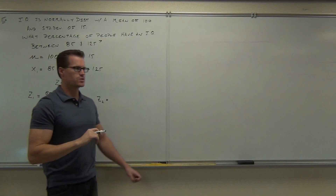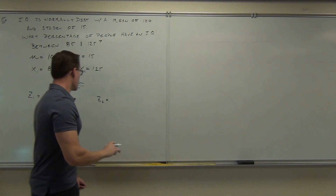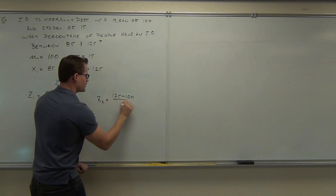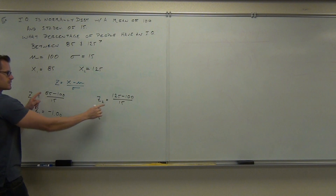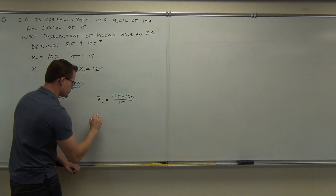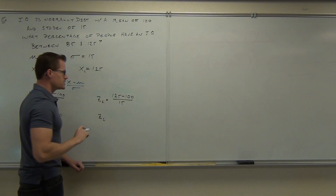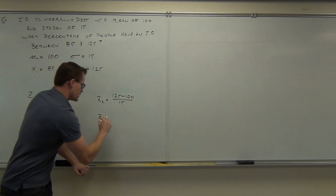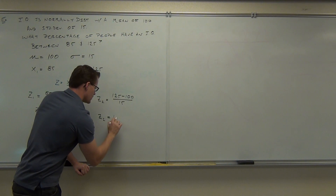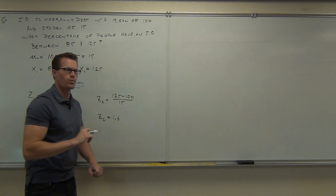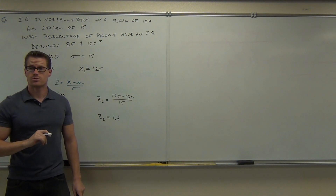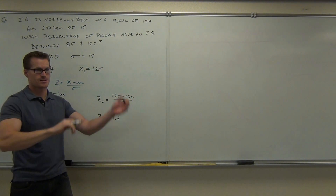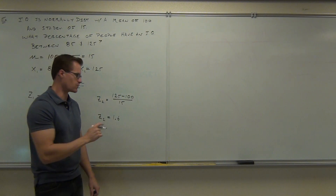Z-scores always round to two decimal places for your table. Z sub 2 — we're going to have that's 125 minus 100 over 15. Notice how the only thing that's changing is our x value. If you do that, you get 25 over 15. That's going to be one point six seven. Round correctly — if you give me one point six six, you are going to be off. One point six six repeating is one point six seven according to our rounding.